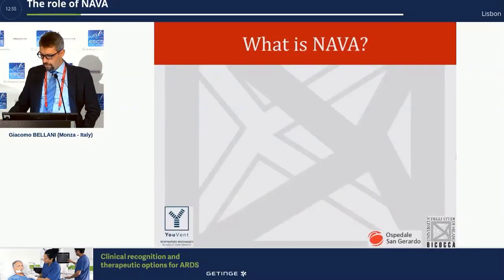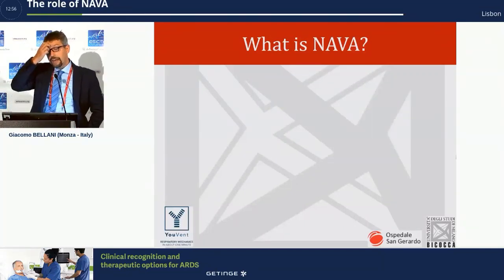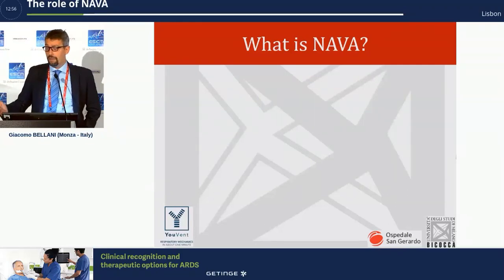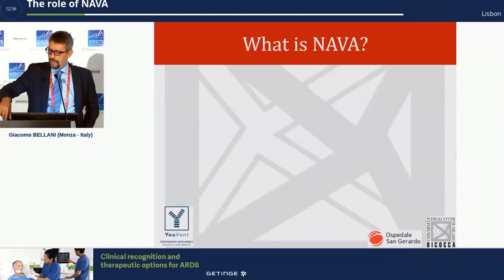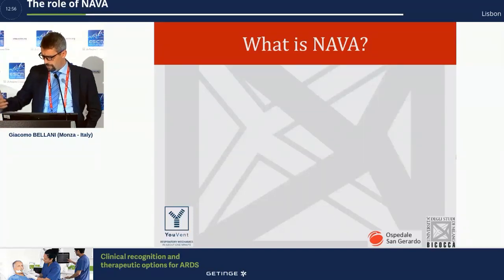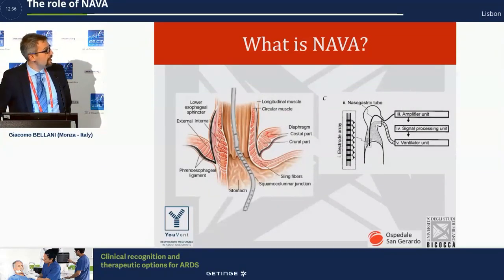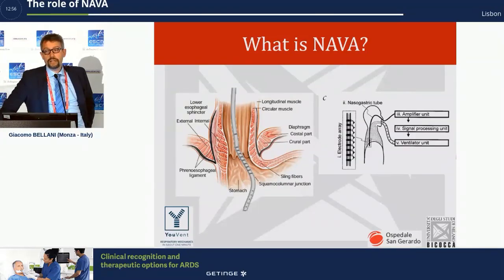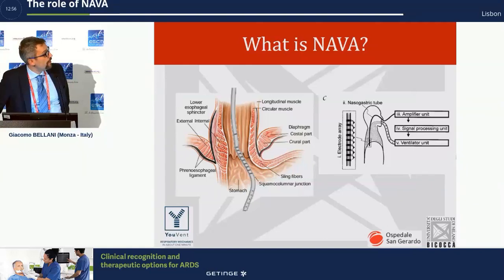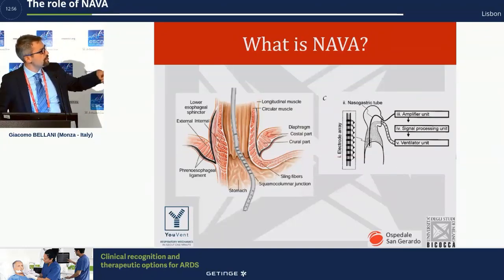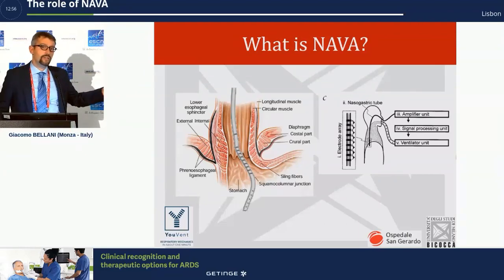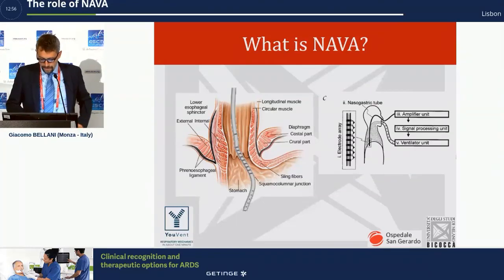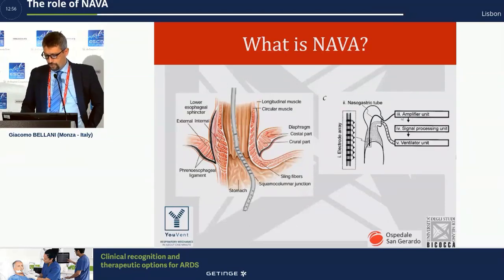Let me say a few words on what NAVA and EDI are. I was lucky enough to work in an ICU that has had this technology available for almost 10 years, but it may not be available everywhere. NAVA is based on positioning a catheter carrying an array of electrodes — about 10 electrodes on a standard nasogastric tube that you can use to feed your patient or empty the stomach, exactly like a normal nasogastric tube. This array of electrodes is connected to an amplifier unit which processes the signal.